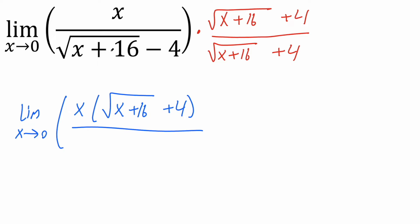The square root of x plus 16 times the square root of x plus 16 cancels the square root out, and you get x plus 16. The square root of x plus 16 times 4 gives 4 times the square root of x plus 16.